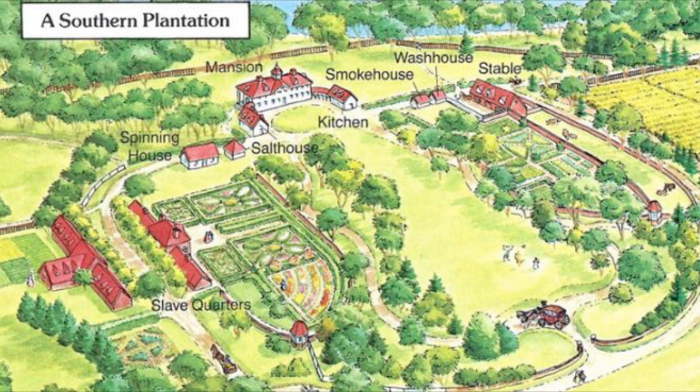The term plantation means to plant, and it came about as settlers arose in the Southern United States. It originally related to agriculture. This word first appeared in English in the 15th century, and as time passed, the word plantation became connected to large-scale enslaved labor operations along the Western Hemisphere.